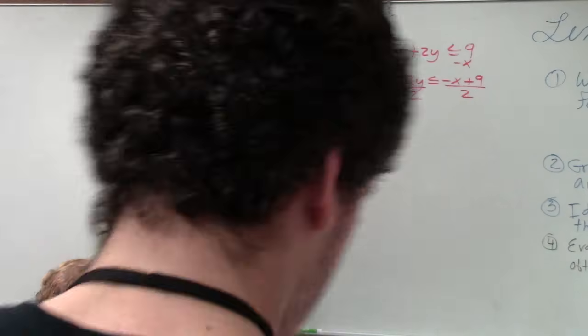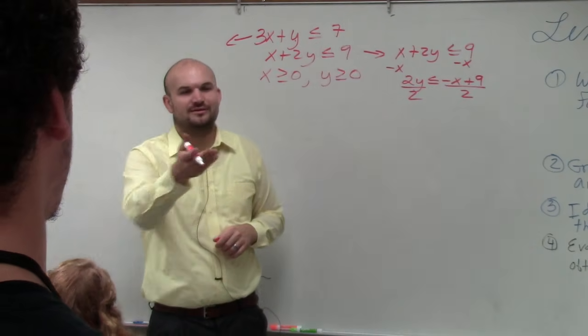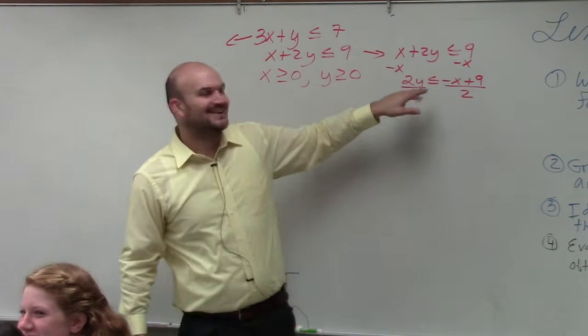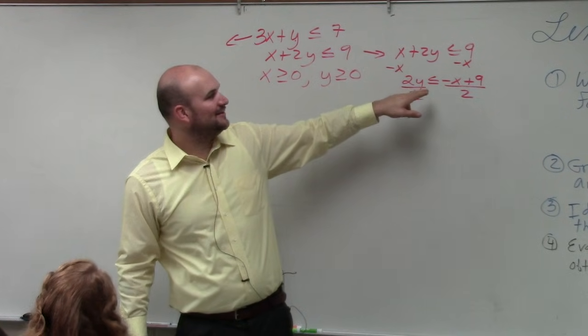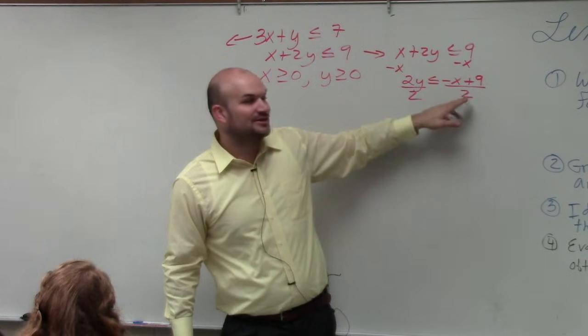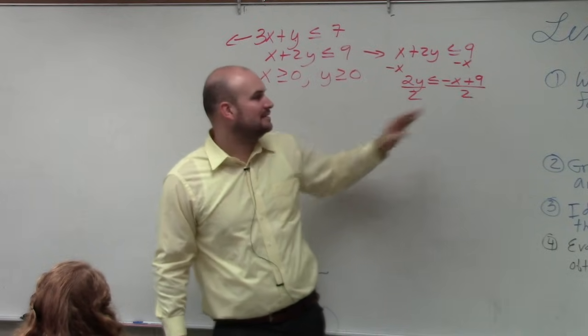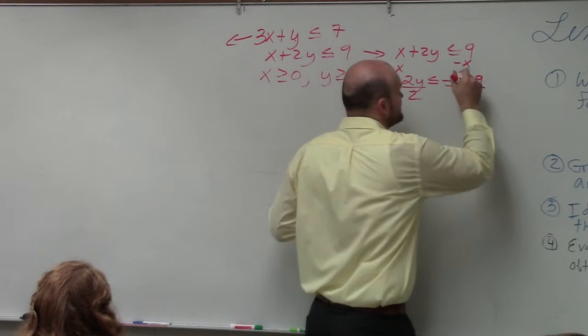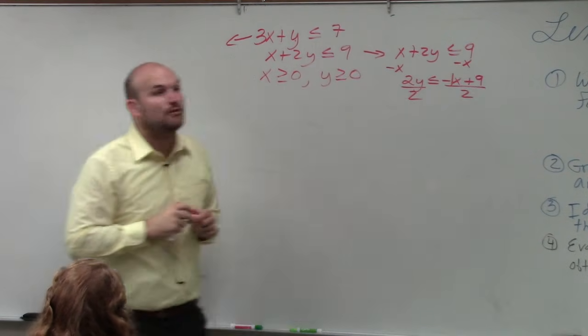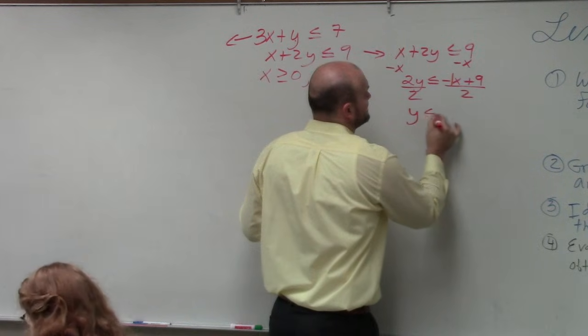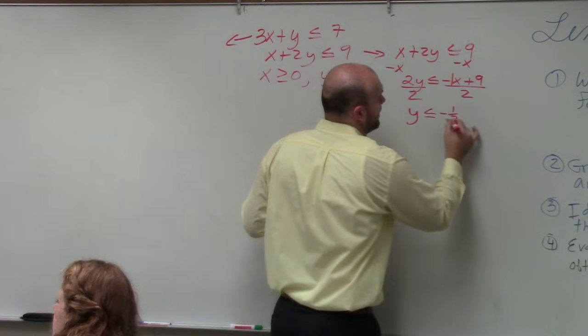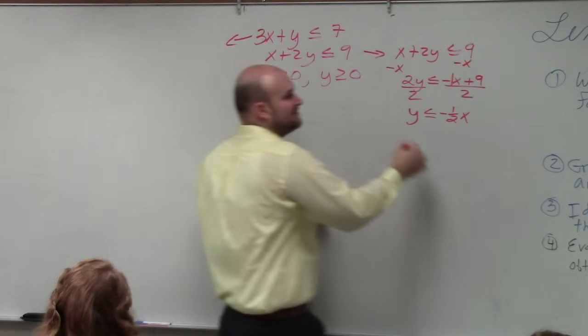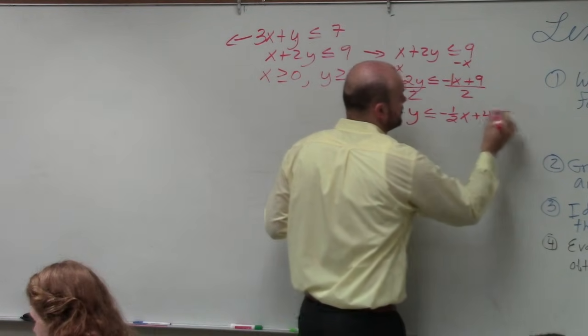Remember, you're dividing both. So remember, both those terms, you're dividing by 2. So you've got to divide both of them. Remember, there is a 1 in front of this x. So really, you're dividing negative 1 divided by 2 and 9 divided by 2. So y is less than or equal to negative 1 half x. And then when graphing, I like to use decimals. 9 divided by 2, if you guys check it with your calculator, is the same thing as 4.5.